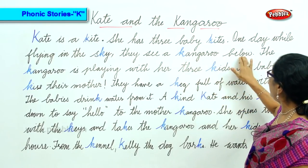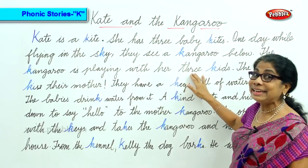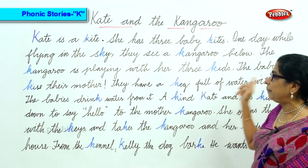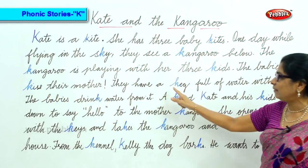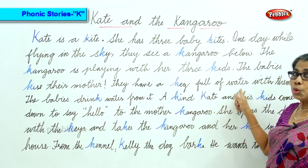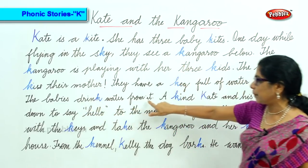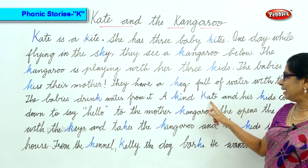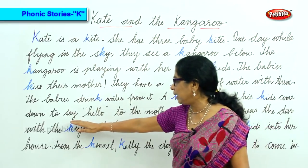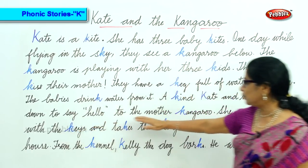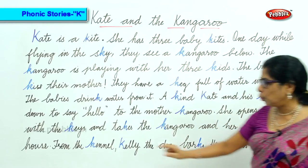One day while flying in the sky, they see a kangaroo below. They look down — the kangaroo is playing with her three kids. The babies kiss their mother. They have a cake full of water with them and the babies drink water from it.